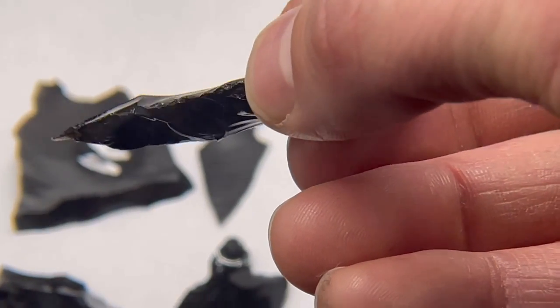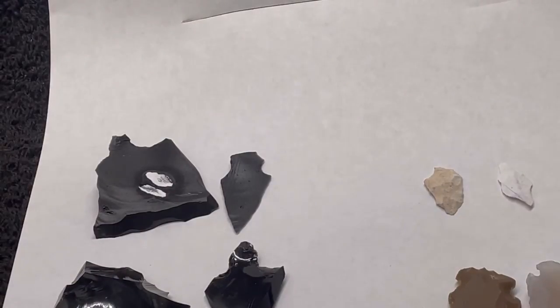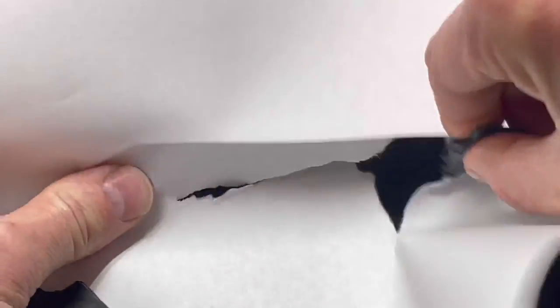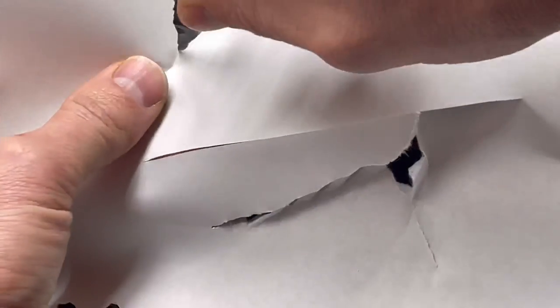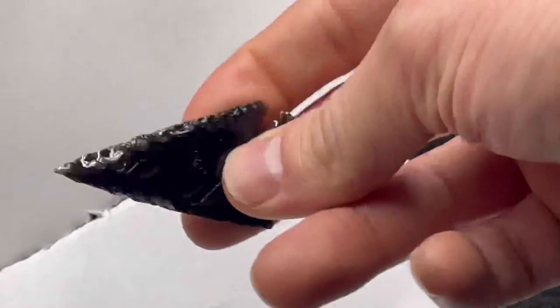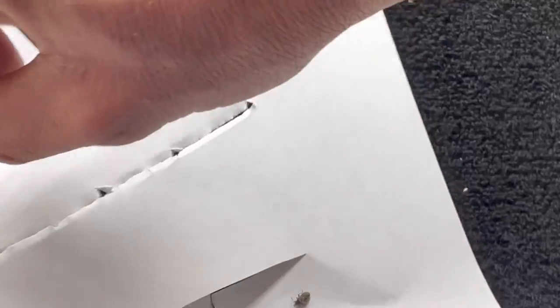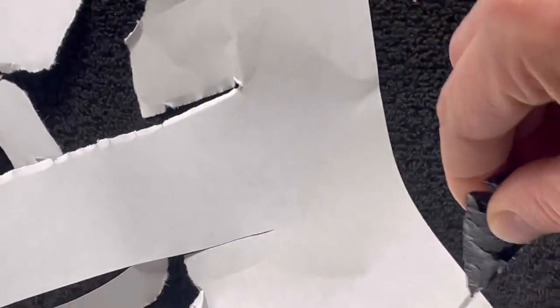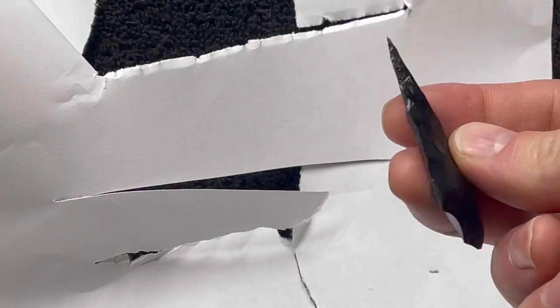You can see the result is it's able to cut through the paper a lot better than it did before. So this is the one that didn't go through the acid. See you can't cut the paper at all except for maybe the very edge. So the acid does sharpen it significantly.